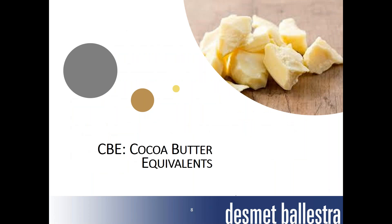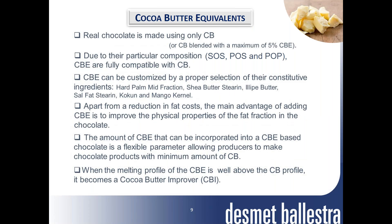A real chocolate is made using cacao butter only, or cacao butter blended with a maximum of 5% of cacao butter equivalent, in accordance with European legislation. Due to their particular composition, cacao butter equivalents may contain high amounts of SOS, POS, and POP triglycerides. Cacao butter equivalents are fully compatible with cacao butter.